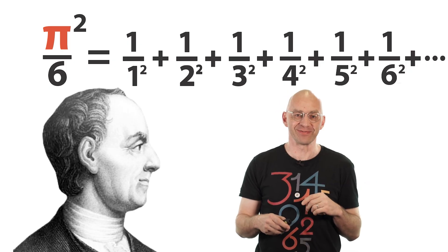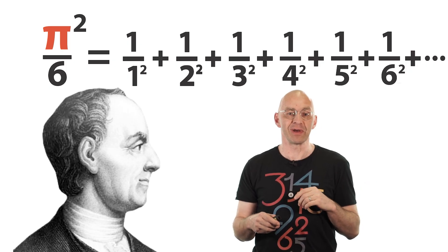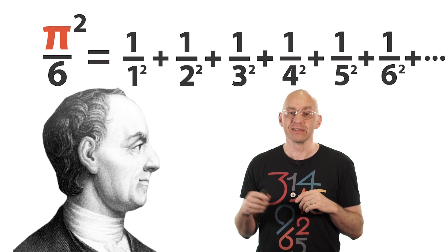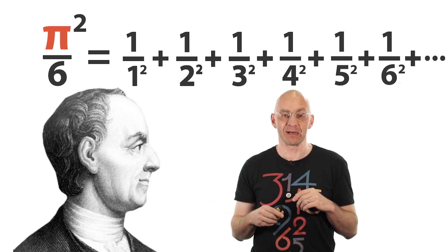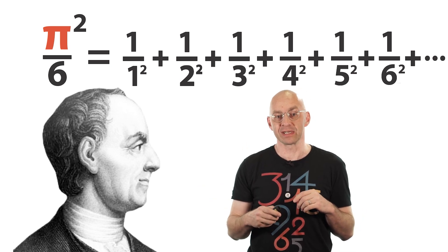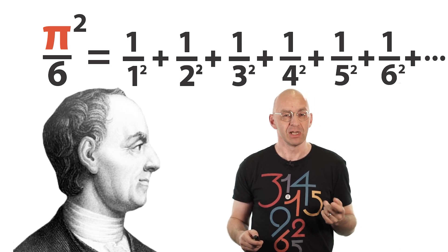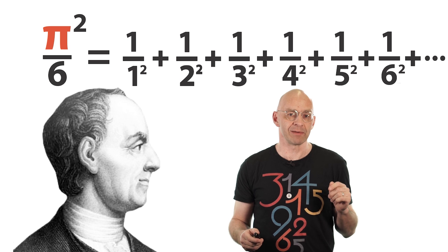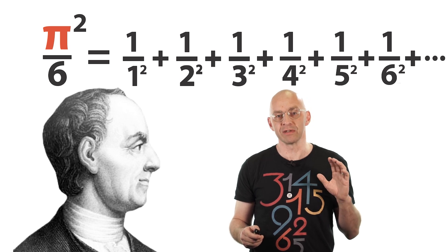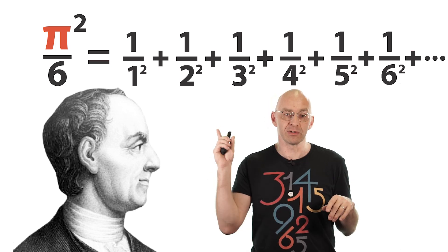Welcome to another Mathologer video. Last time I showed you how the mathematical superstar Euler discovered this stunning identity out there, pi squared over 6 is equal to the sum of the reciprocals of the squares. Today I'll introduce you to the mathematical magic that allowed him to morph this infinite sum into an infinite product.